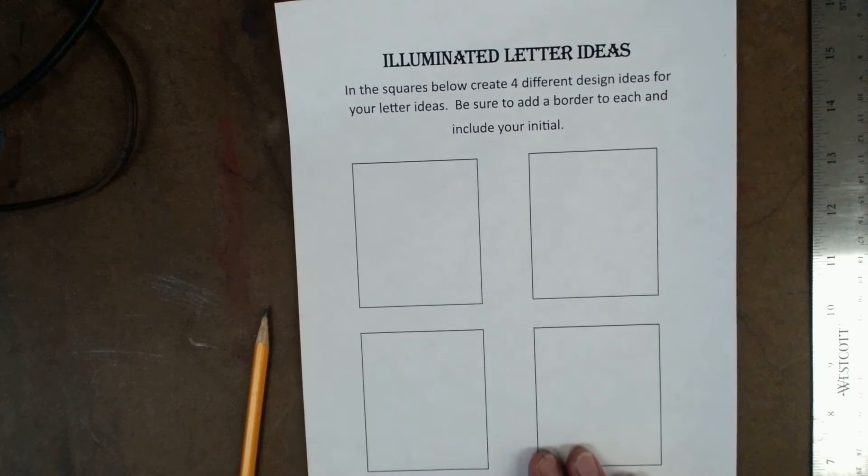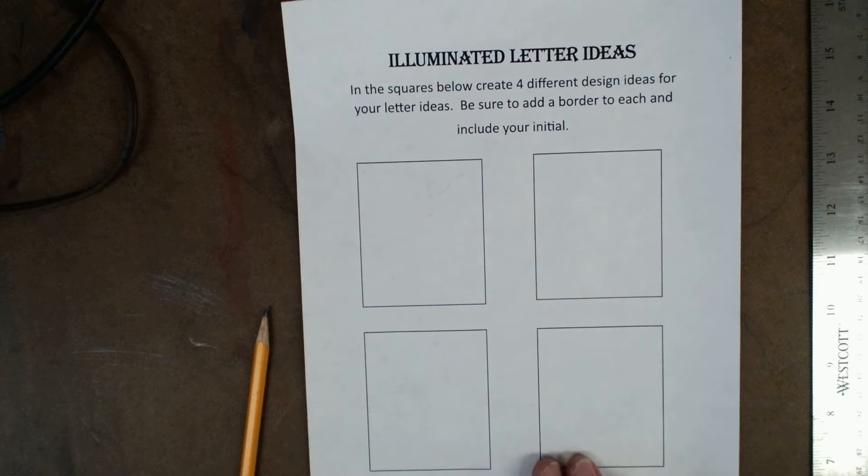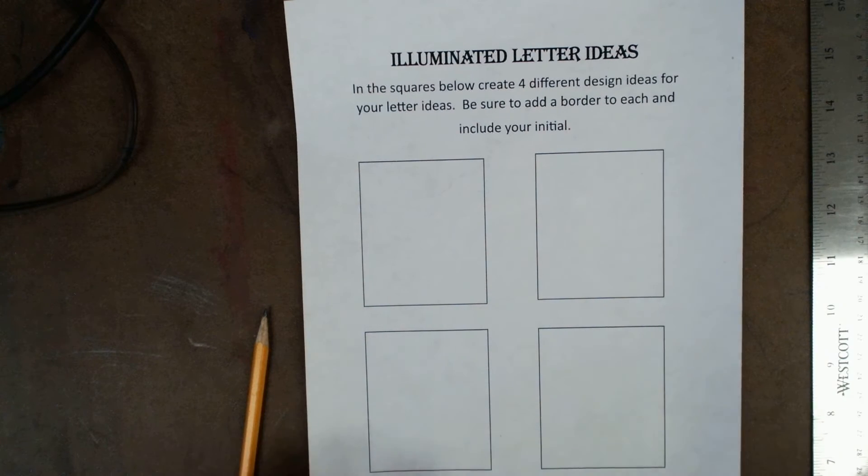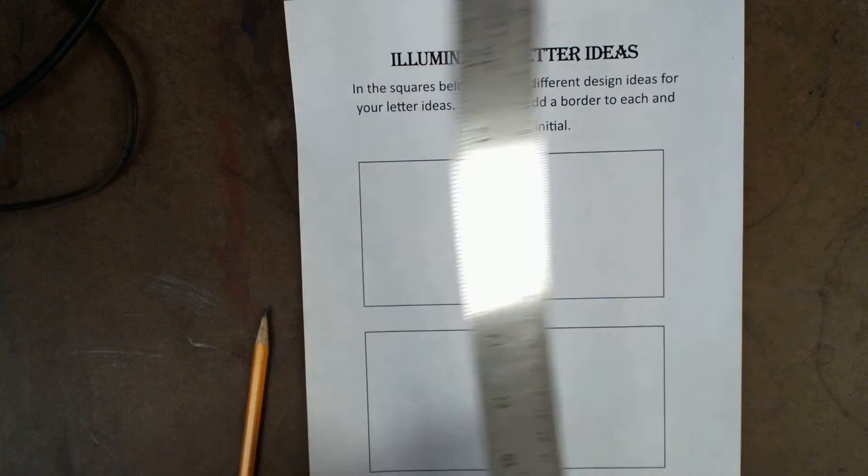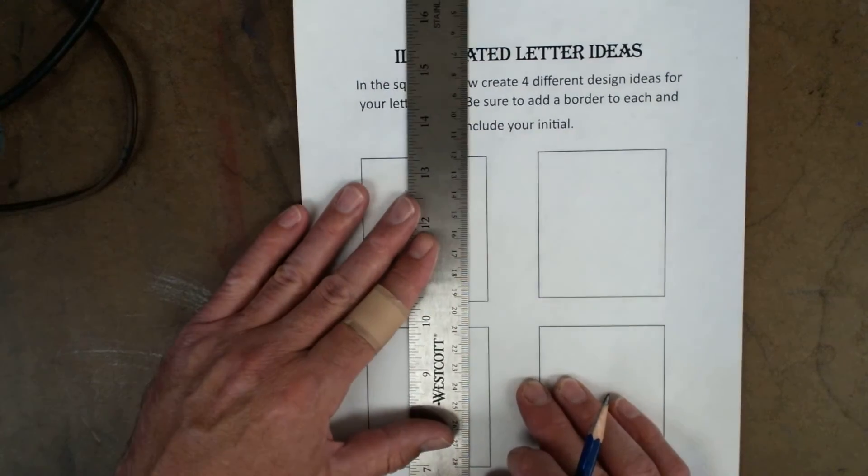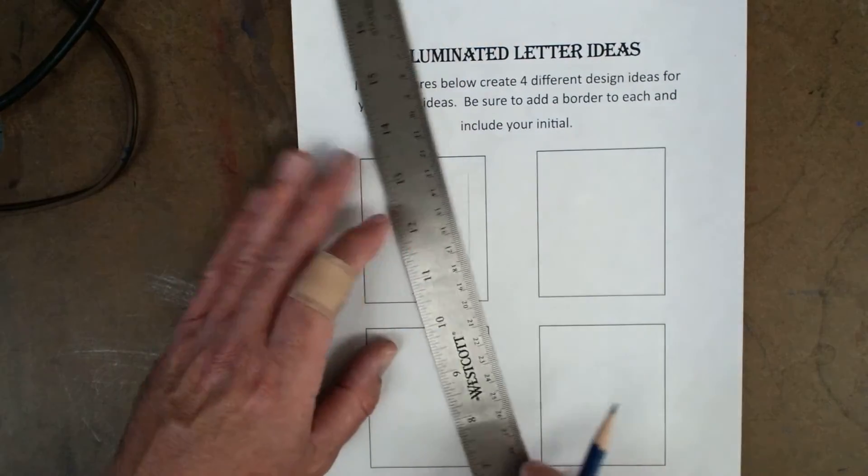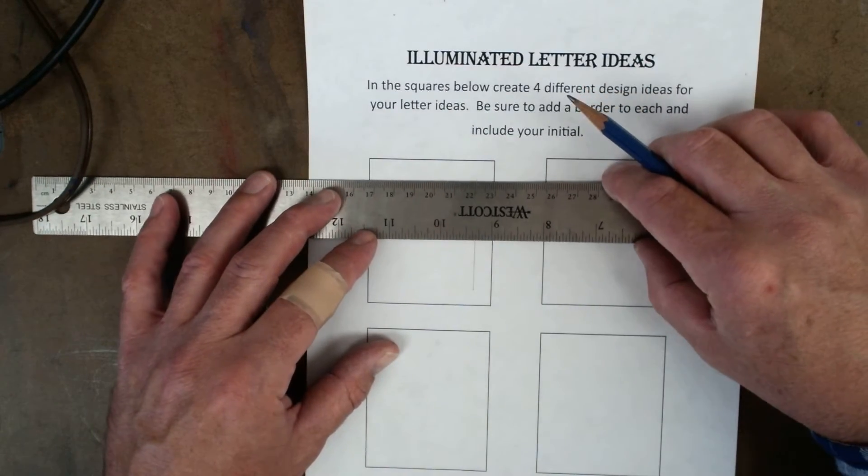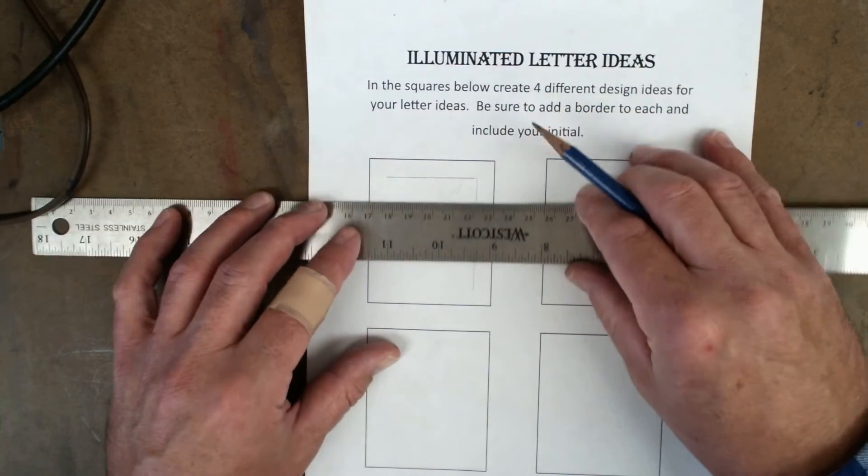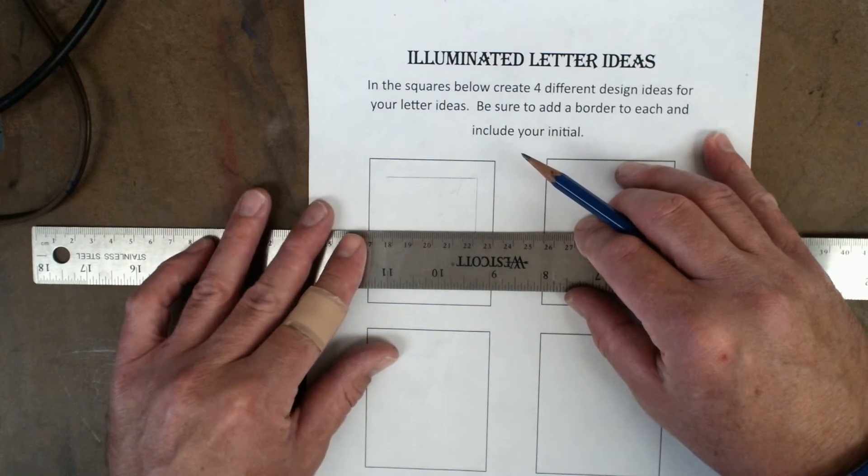A few things that I want to point out that I do want you to include when you put this together. First and foremost, I do want you guys to have some kind of border on these letters. Now if you want to measure these out you can, but remember these are rough ideas. I mean obviously I want you to spend some time, make them look good, but you don't have to be terribly technical about them.